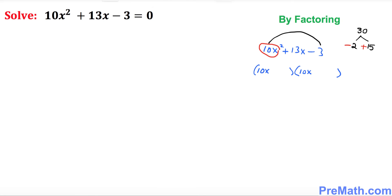Since this is a positive 13, that means positive 15 and negative 2. Put negative 2 in the first parentheses and positive 15 in the second. Now look at the first parentheses — what is the GCF? The greatest common factor of 10 and 2: divide by 2. For the second parentheses, the GCF of 10 and 15 is 5, so divide by 5.